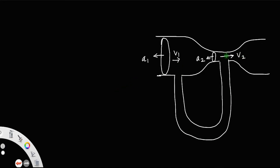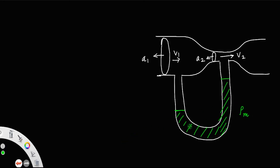Both these different cross sections are connected using a U-tube manometer, which is filled with mercury of density rho_m, where rho_m is the density of the mercury.